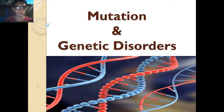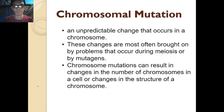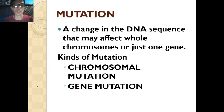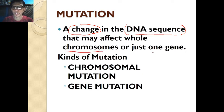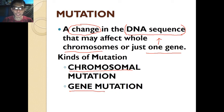What is mutation? Mutation is a change in DNA sequence that may affect a whole chromosome or just one gene. The key word here is 'change' — a change in the DNA sequence. Mutation occurs in the DNA sequence and might affect a chromosome or just one gene. There are two kinds of mutation: chromosomal mutation and gene mutation.